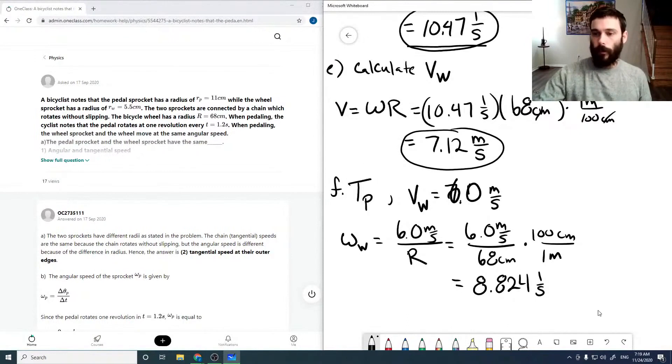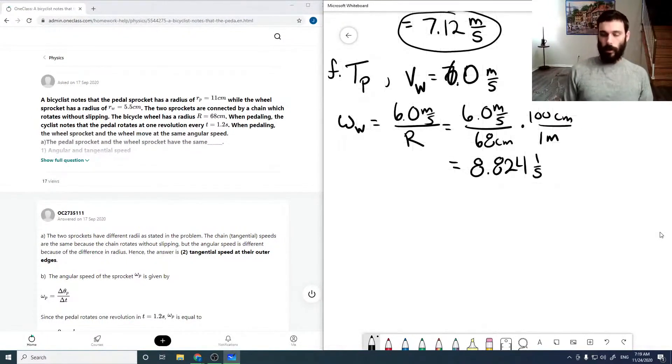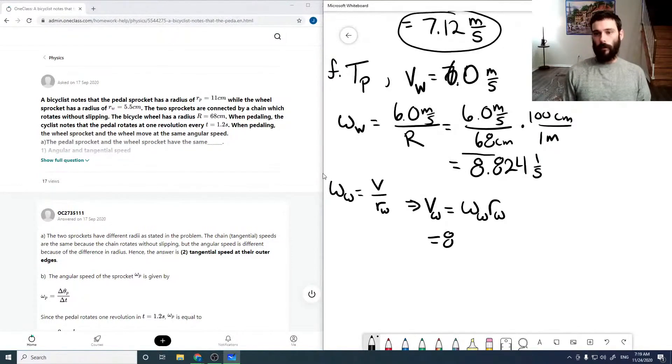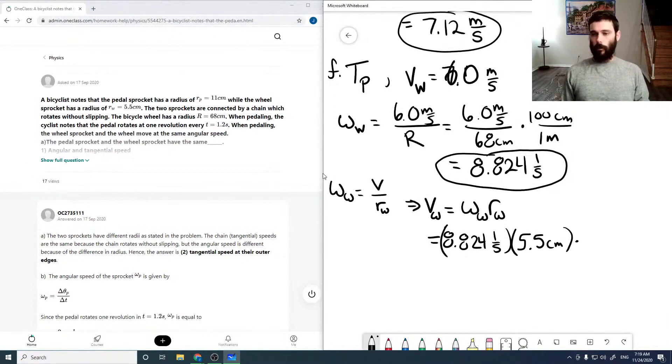Now, this frequency is going to be the same frequency as for our wheel sprocket. So that means omega wheel is V over R for the wheel. So that V is then our tangential velocity. So we can solve for our tangential velocity for the wheel sprocket as omega times R, which is going to be the same omega because both the large wheel and the wheel sprocket spin at the same frequency.